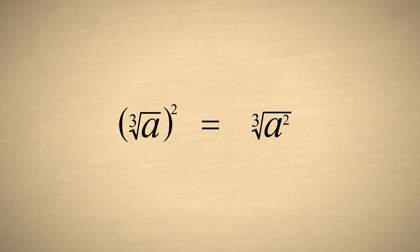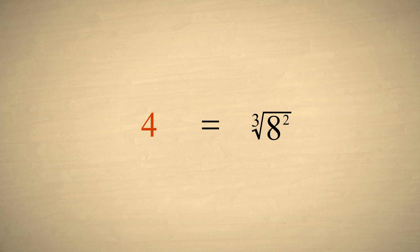It may seem strange that both these operations give the same result. However, if we pick a value for a which comes out even, it is easier to see why this is true. For example, let's say that a is equal to eight. Now on the left side, the cube root of eight is two, and two-squared is four. While on the right side, eight-squared is sixty-four, and the cube root of sixty-four is also four.